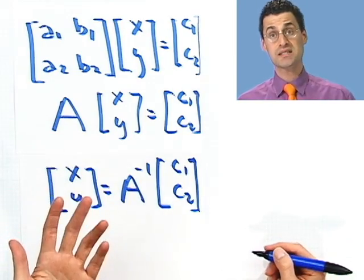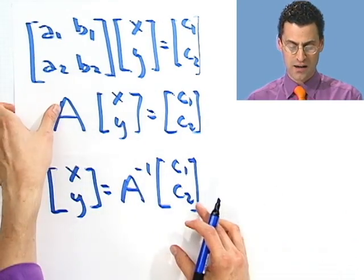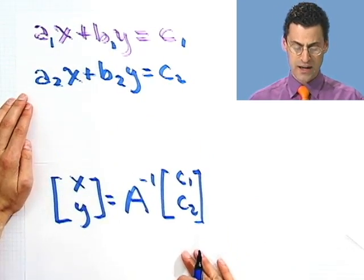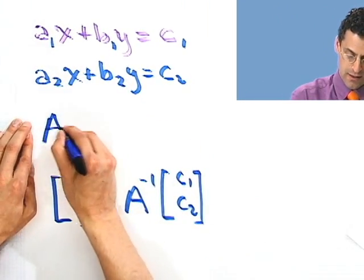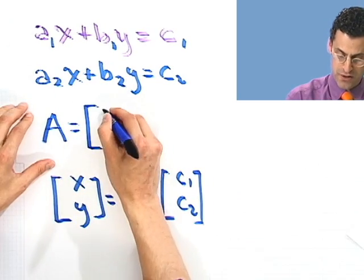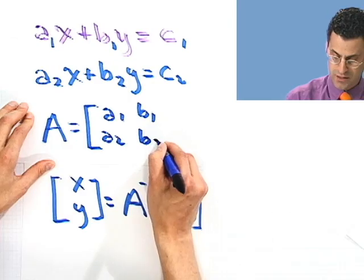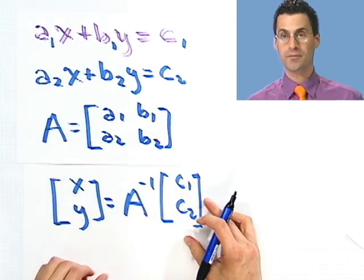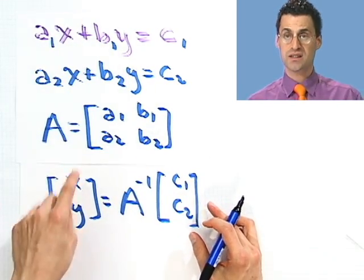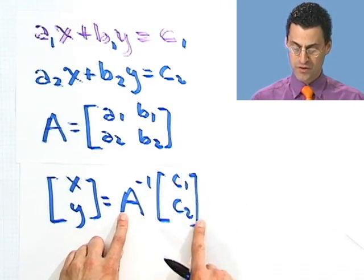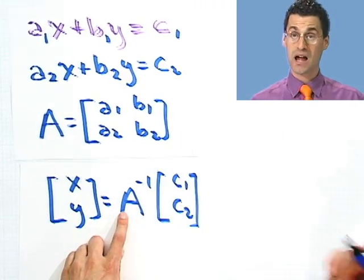So what that tells me is the following. If I want to solve an equation that looks like this, if I create a matrix A that's just the matrix of coefficients, a1, b1, a2, b2, just strip off those people, then the solution to this system, x, y, will just be A inverse multiplied by these numbers. And that's the answer. Let me try to illustrate that with an example.